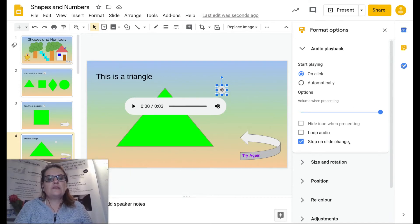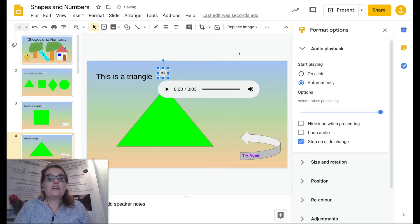Look at the format options that have opened up. I don't want it to be on click. For the little children, I want it to play automatically. So I click automatically. I move this audio where I want it to be and it's ready to go.